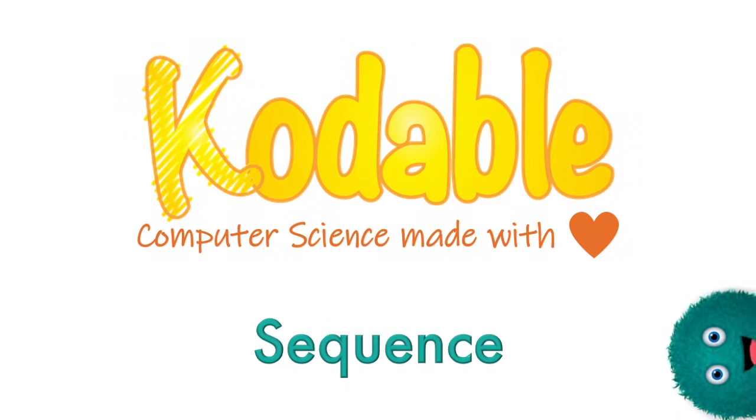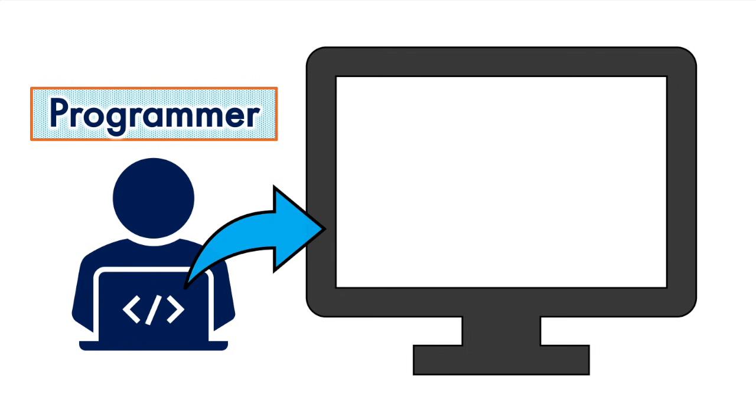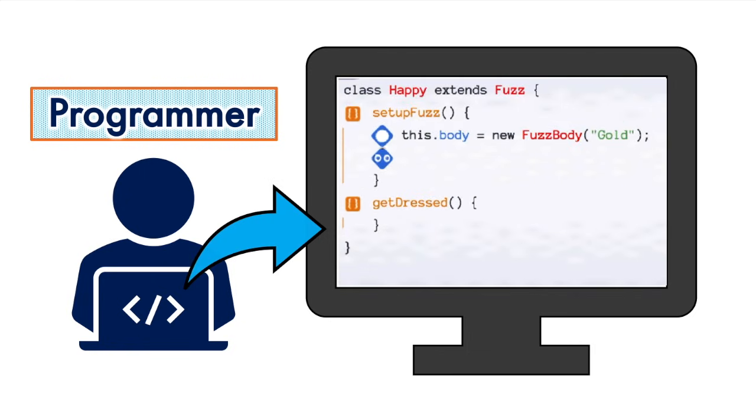Let's go! We know that humans are smarter than computers. Programmers are people who write instructions to tell a computer what to do.